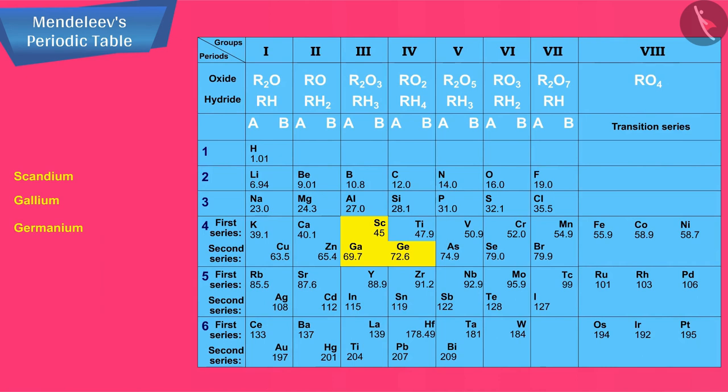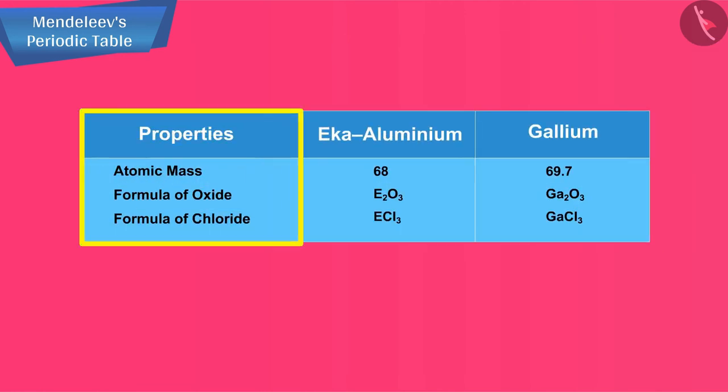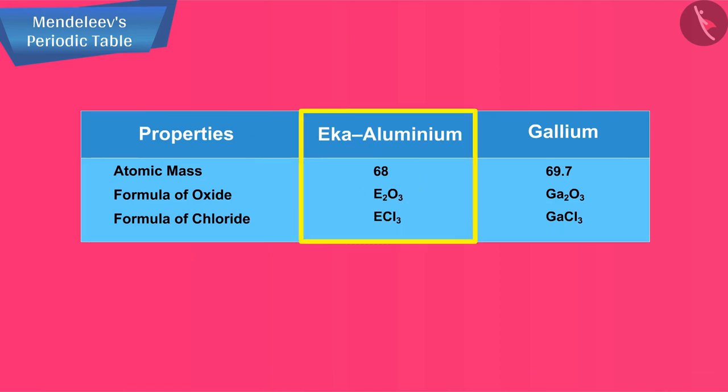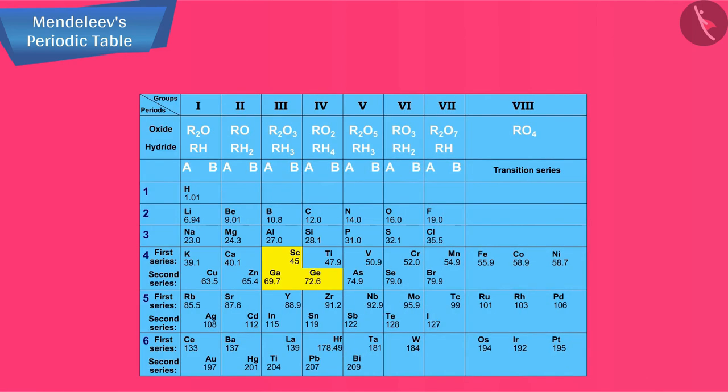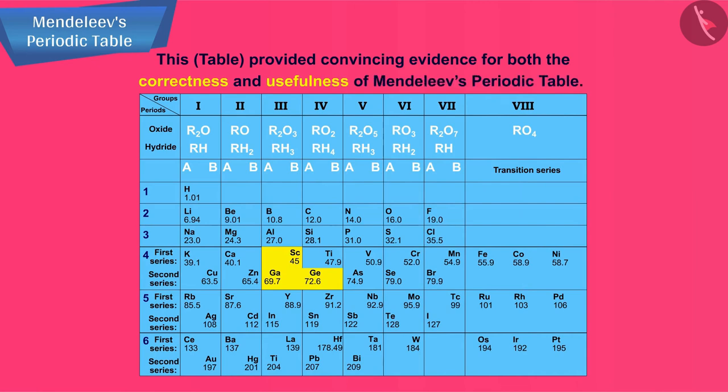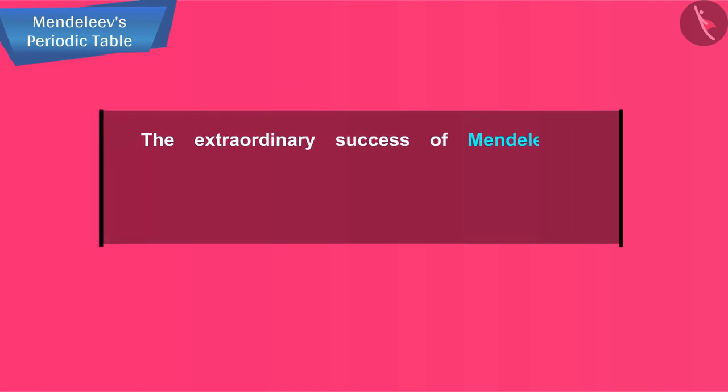For instance, scandium, gallium, and germanium discovered later have properties similar to Eka boron, Eka aluminium, and Eka silicon respectively. The properties of Eka aluminium predicted by Mendeleev and those of the element gallium which was discovered later and replaced Eka aluminium, this table provided convincing evidence for both the correctness and usefulness of Mendeleev's periodic table. Further, it was the extraordinary success of Mendeleev's prediction that led chemists not only to accept his periodic table but also recognize him as the originator of the concept on which it is based.